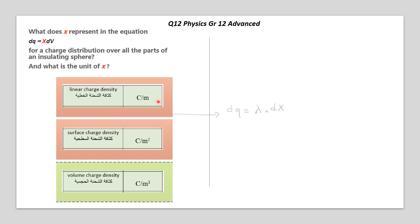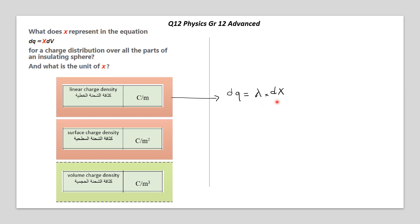Let's analyze the first option. Here, they are saying linear charge density. Linear charge density is associated with lambda. So, it's similar to this equation, but it's not too similar. Look here — it's dV, which is the volume. Here, it's dx.